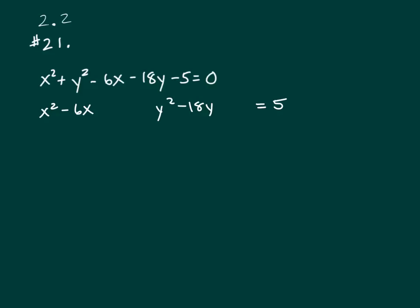So complete the square on the X's. The formula is plus, it's always one half times B, and that's negative 6 squared. And now let's complete the square on the 18. Let me erase this here and give myself a little more room. Equals 5.